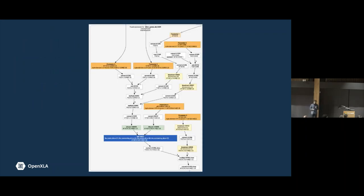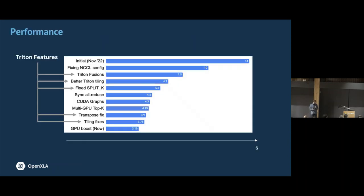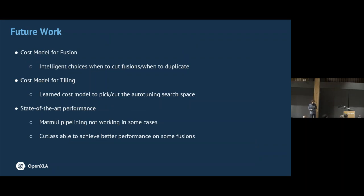By applying such technique, we can generate fairly complicated matmul fusions as shown in the slide with many complicated instructions and broadcasts and everything in both fusion prolog and epilog. And while doing this work, we mostly focused on internal benchmarks. So I can't really show many open source comparisons yet, but basically for an internal benchmark, mainly by doing Triton fusions, we could cut the performance by more than 4x, just because before we were mostly relying on the cuBLAS call. And for small matrices, data movement operations can become very expensive.